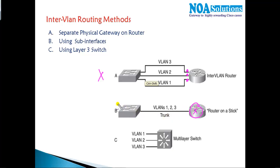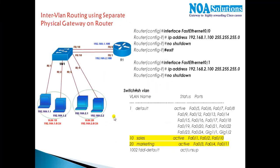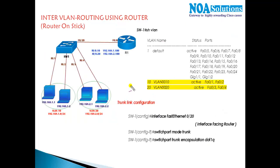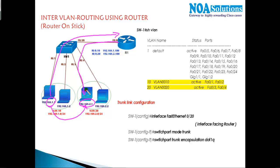With the second method — router-on-a-stick — traffic coming from VLAN 10 goes to the router, and the router sends it back on the same interface through a sub-interface to VLAN 20. The major disadvantage is that even if you want to communicate within the same switch between different VLANs, traffic still has to go to the router and come back, adding latency.